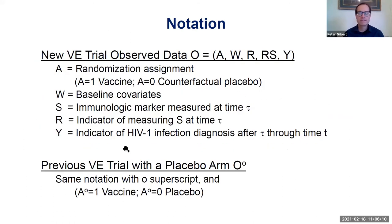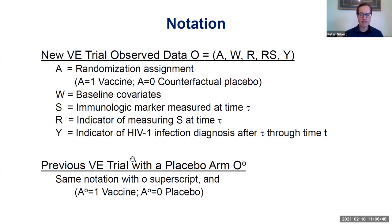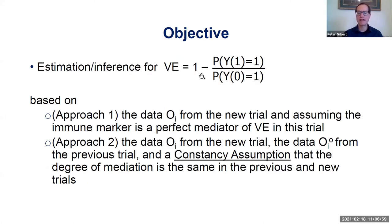Getting into the statistics: in this new active comparison vaccine VE trial, the data include randomization assignment to vaccine or counterfactual placebo, baseline covariates W, R as the indicator of measuring the immune marker at a fixed time τ post-vaccination, S as the immune marker at time τ, and Y as the indicator of HIV infection diagnosis after the marker is measured through some follow-up time such as two years. We also consider a previous vaccine VE trial that did have a placebo arm — for example the 705 or 706 trial — and our objective is estimation and inference of vaccine efficacy, defined as one minus the infection rate ratio vaccine versus placebo, using potential outcomes notation.